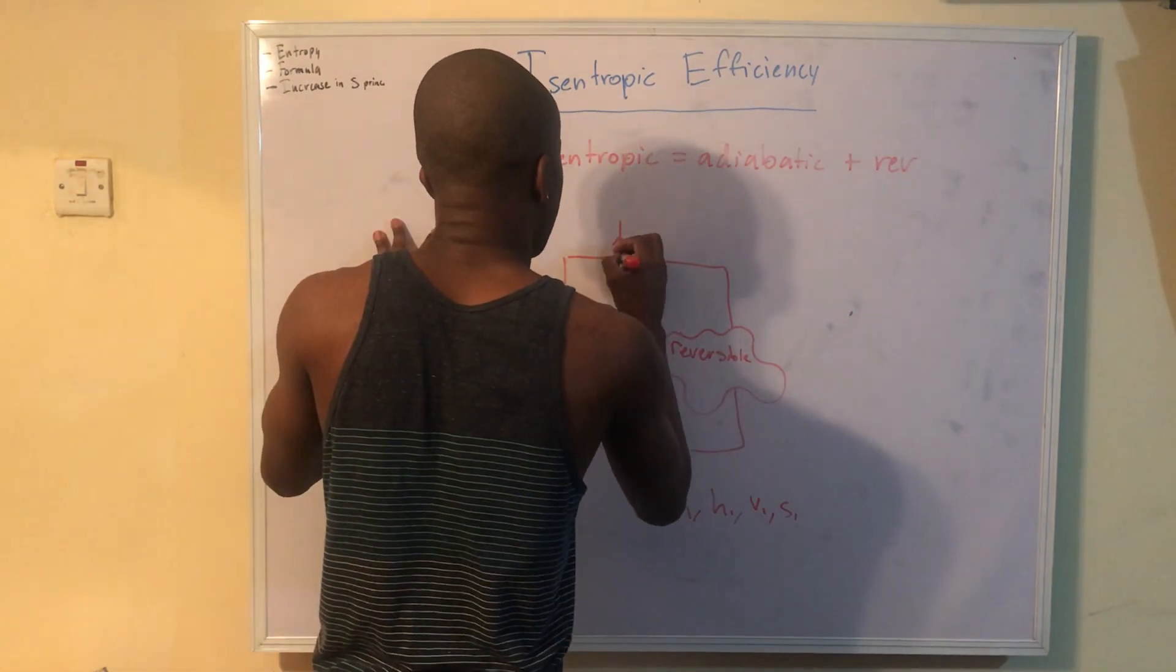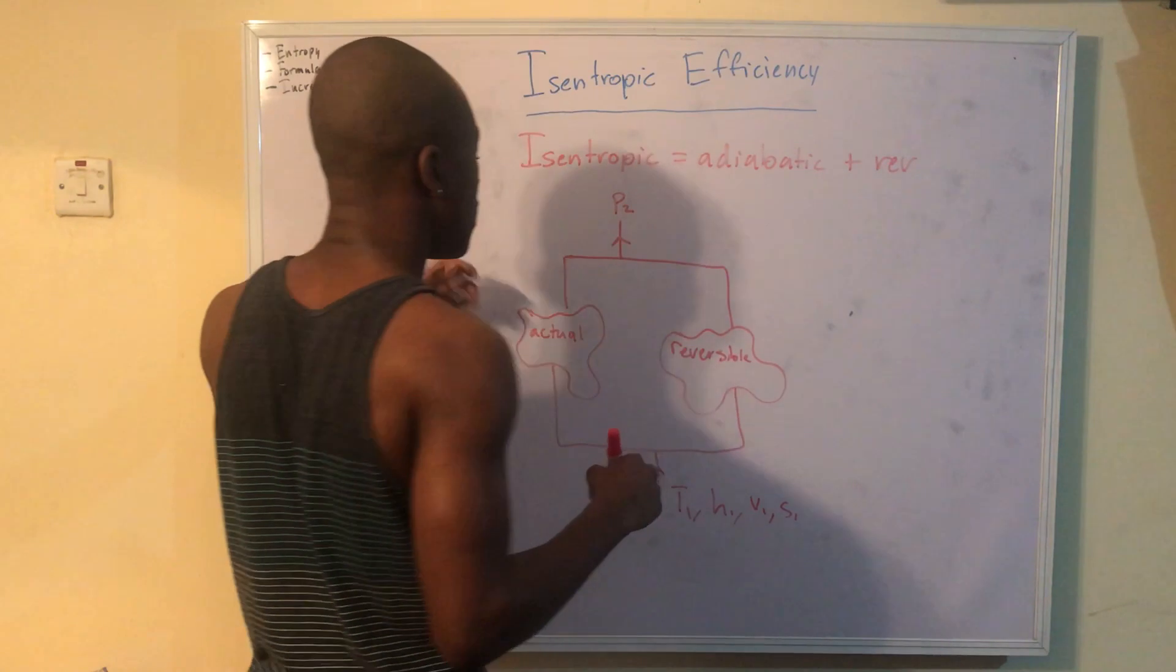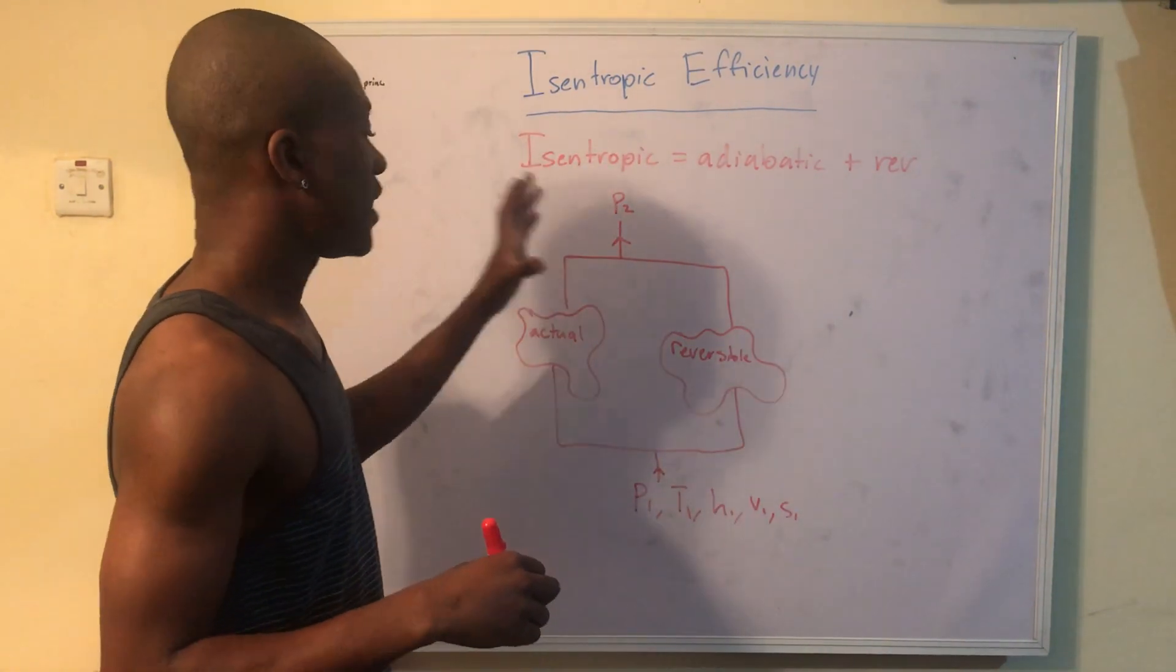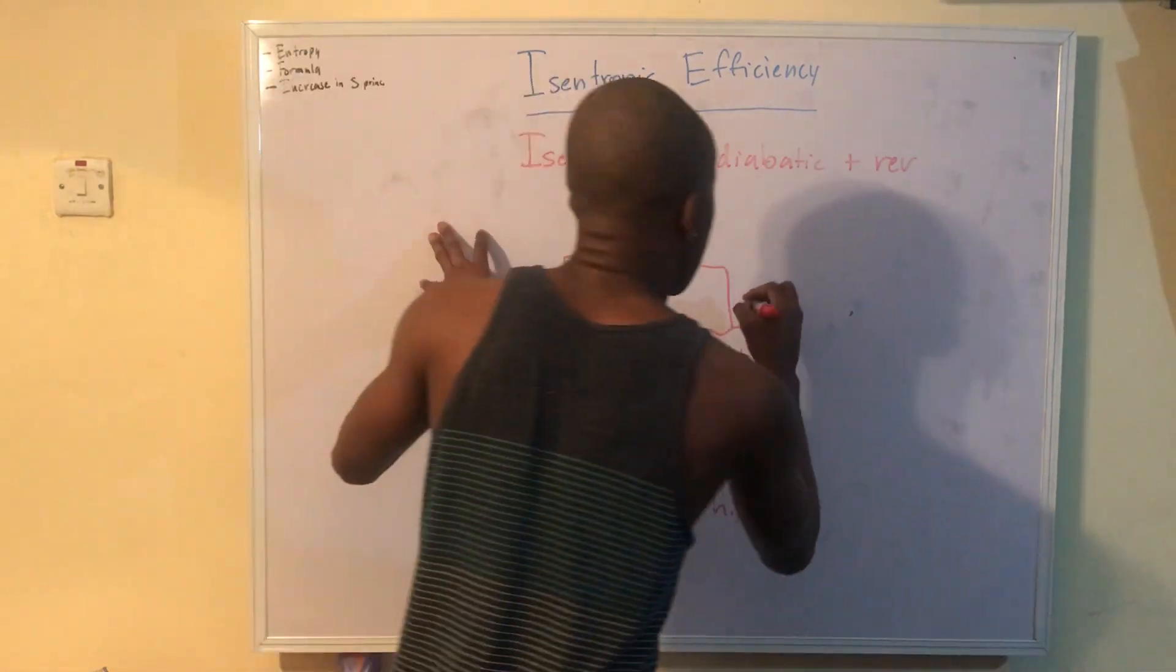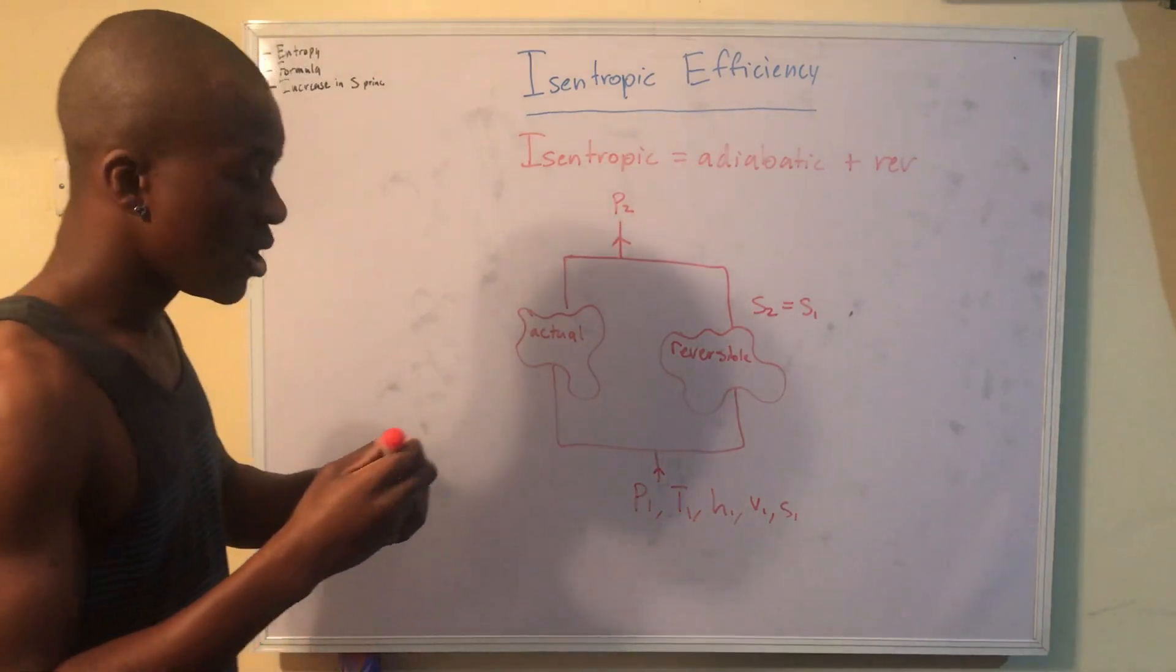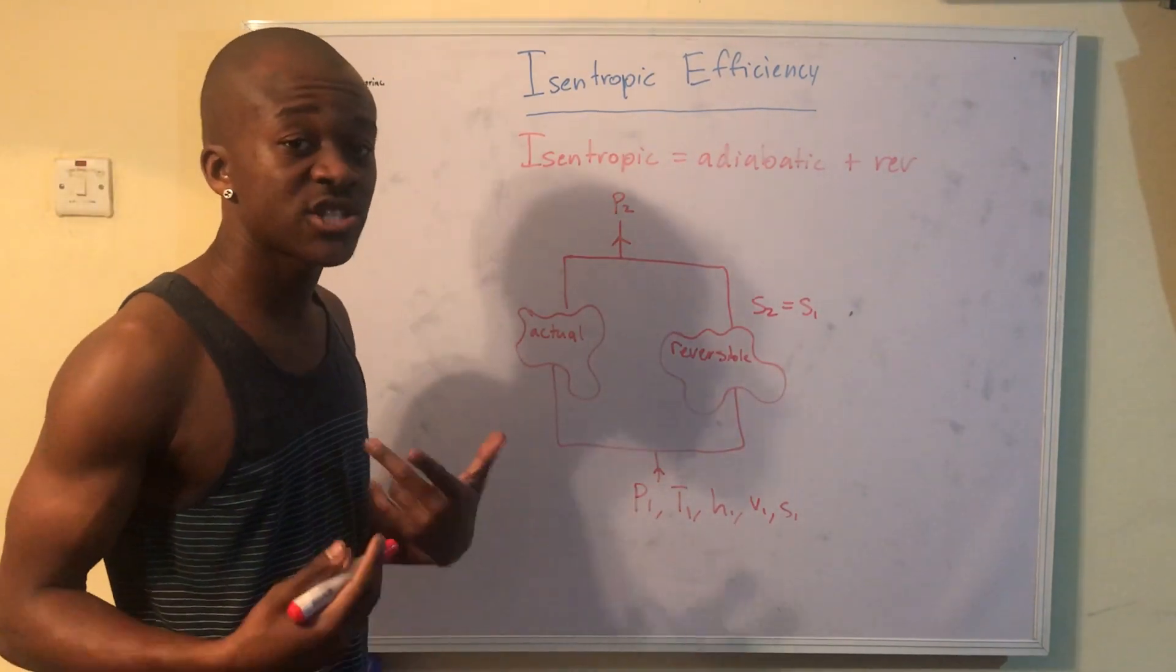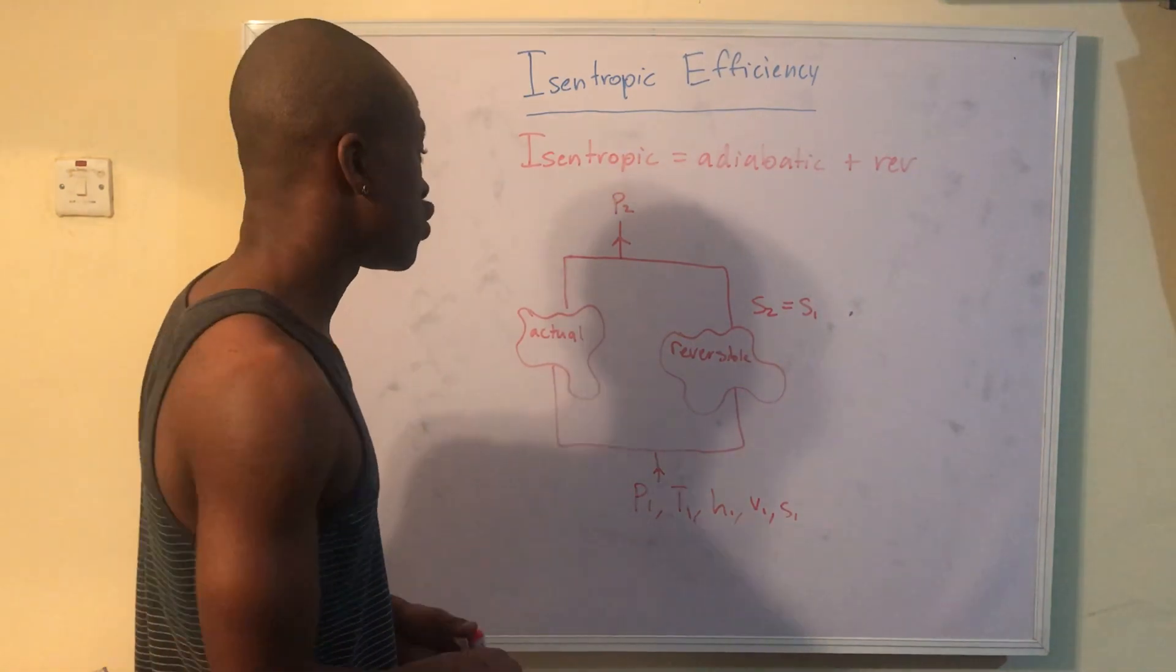What we're going to see here, what we're going to find is that at the outlet they have the same pressure. P2 is the same for both of these devices. However, for this reversible device, S2 is equal to S1. So our entropy did not change. And that's sort of what we get isentropic - isentropic means there's no change in entropy.